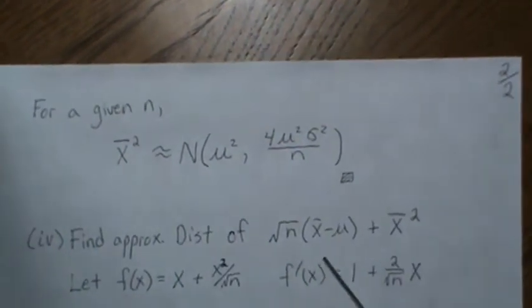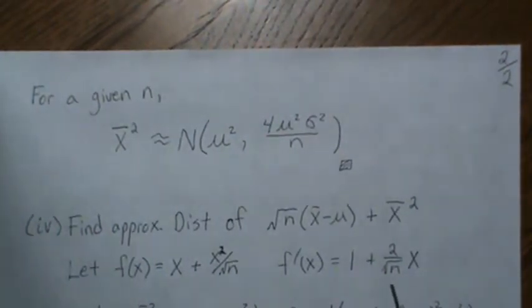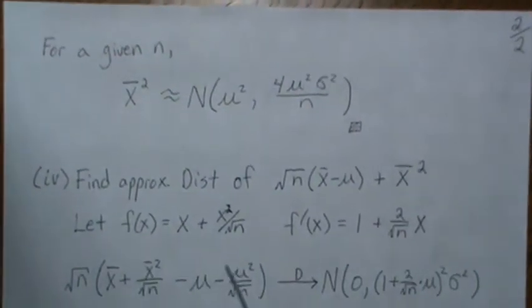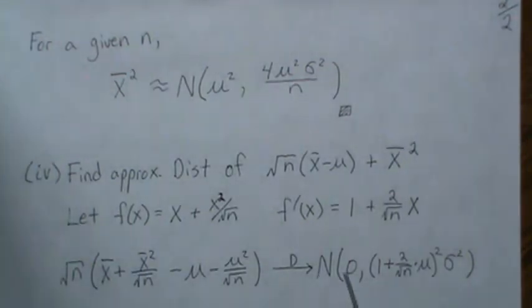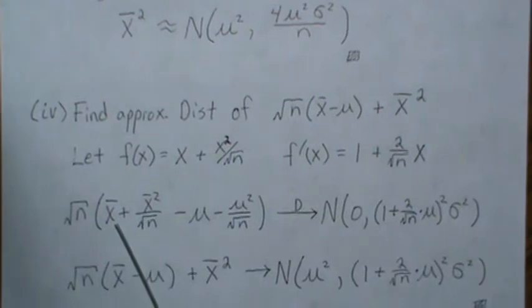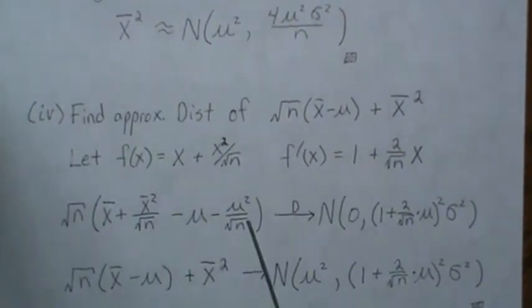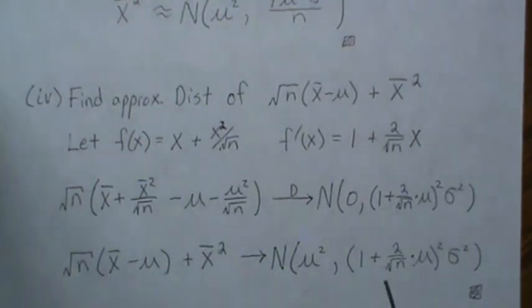So we have to find some function that is going to transform the central limit theorem result into what we want. That function is f(x) = x + x²/sqrt(N). The first derivative is 1 + 2x/sqrt(N). When we take F(X-bar) we get the combined expression, and F(mu) gives us the corresponding value. That quantity has a limiting distribution of zero and variance equal to the square of the derivative evaluated at mu. Rearranging — moving the minus mu terms, multiplying through by sqrt(N), and moving mu squared over — this combined statistic is approximately, or has a limiting distribution of, the derived normal distribution.